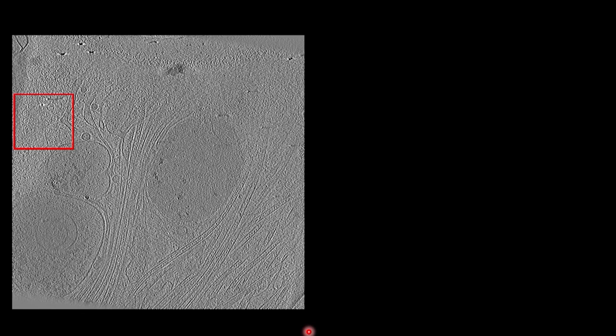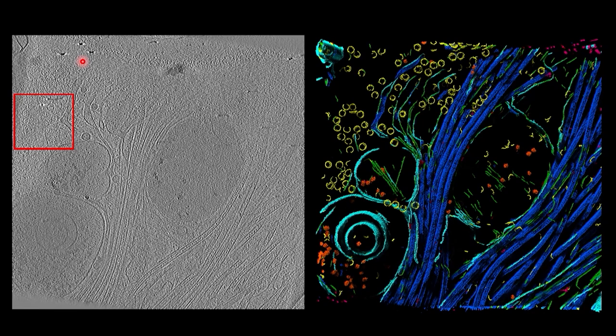Another observation: in some data with microtubule filaments running along, we saw in one region a bunch of rings that were confusing. We trained a model to segment them, and when we averaged a few together, we think we're seeing tubulin rings. Microtubules are made up of 12 to 13 protofilaments forming the full filament, and it's known that tubulin can form small rings as a byproduct. It's unclear if they're a pool of monomers to build filaments from or a breakdown product, but we're seeing them routinely, and our network can now segment them quickly.